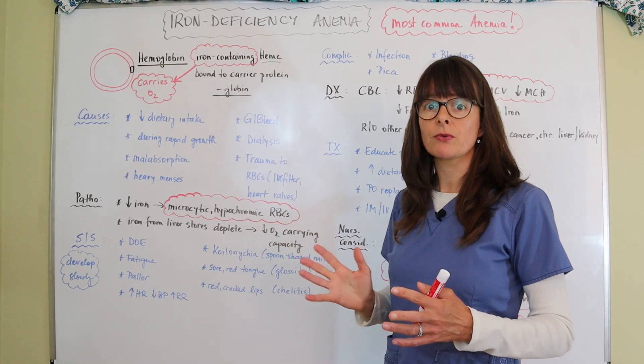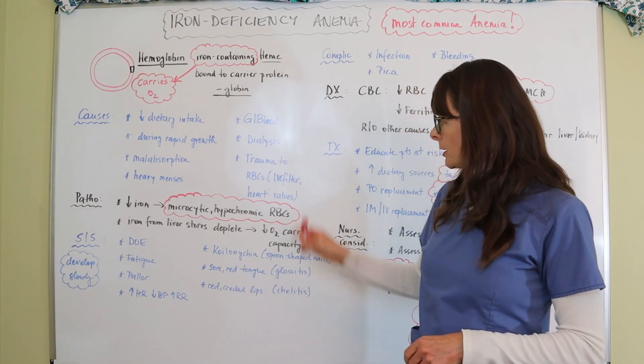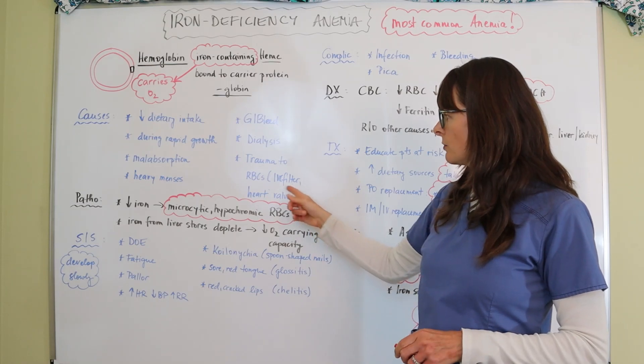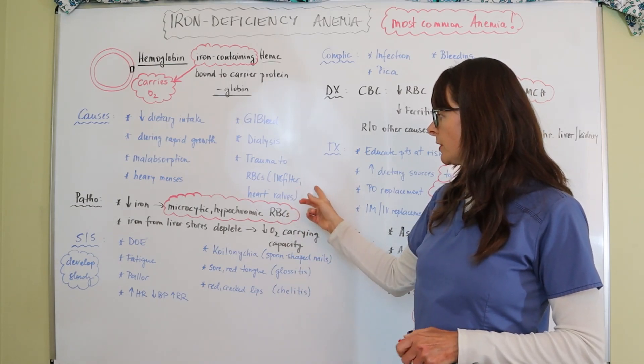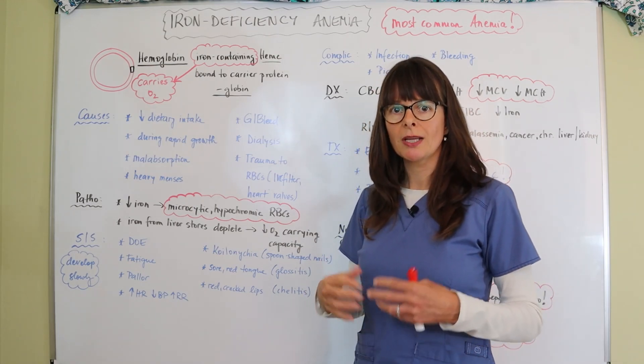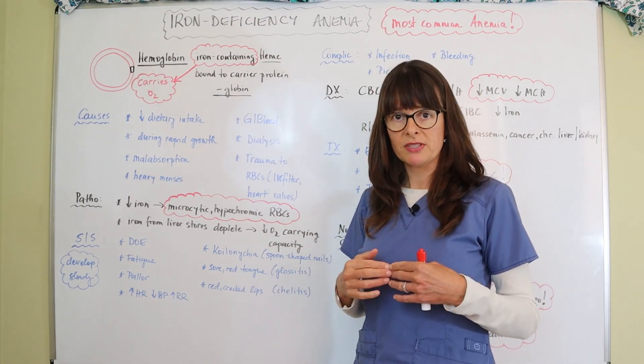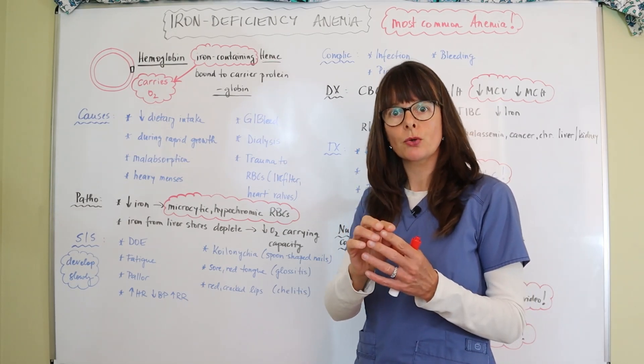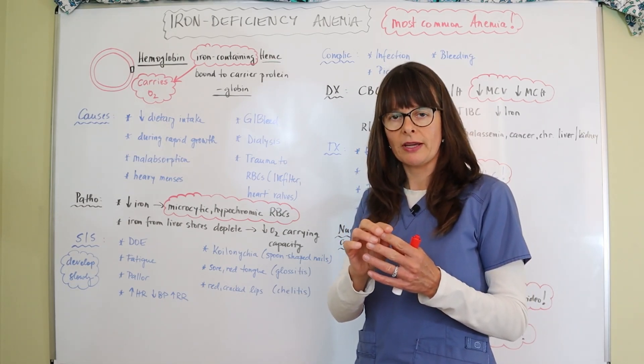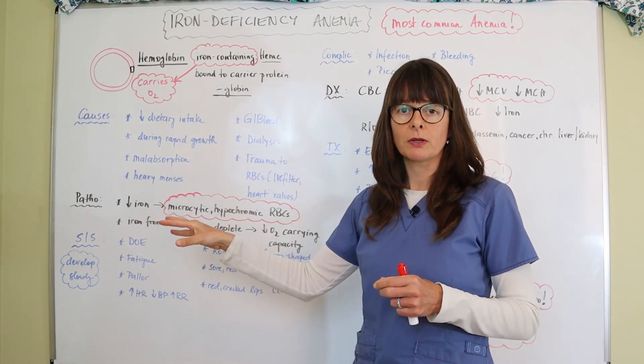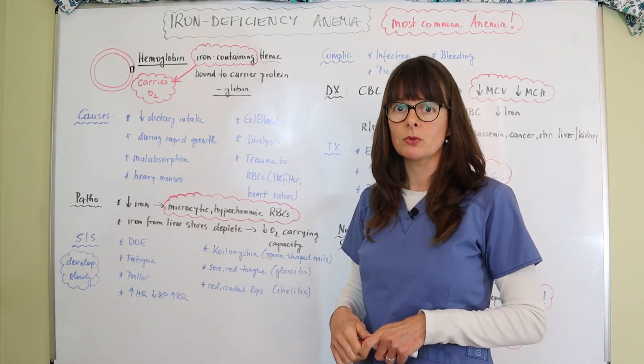Any kind of trauma to the red blood cells, and so I put here IVC filter, inferior vena cava filter, or heart valve, so anything that's implanted in the patient that's mechanical and prosthetic that those blood cells go through, as they pass through these artificial valves or that filter they might get damaged and therefore the red blood cells get cycled out and we lose that iron.